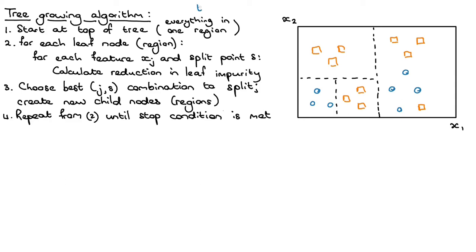It is still a top-down algorithm where we start with all the data in one central node and then recursively split the leaf nodes. It's still a greedy algorithm in the sense that at every iteration we simply split the best node — the current leaf node that gives us the best improvement. And it's still a recursive algorithm, which means that we keep on looking at the leaf nodes and continually splitting them.